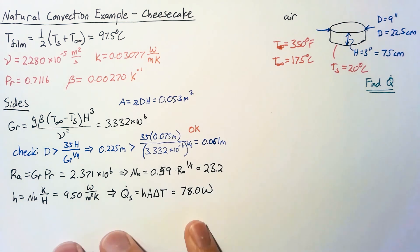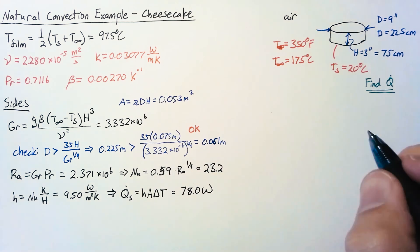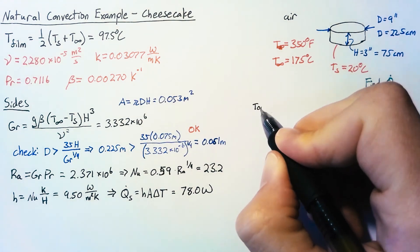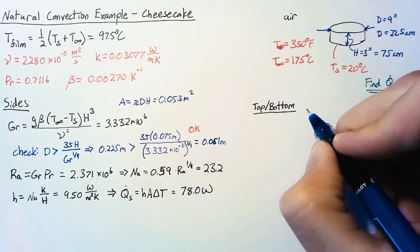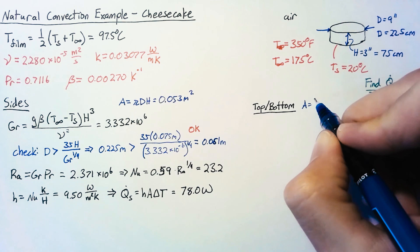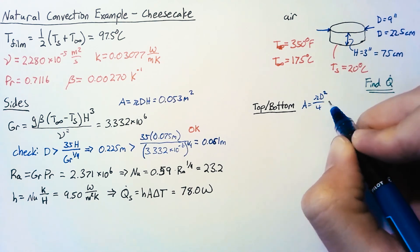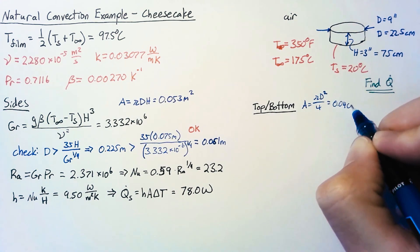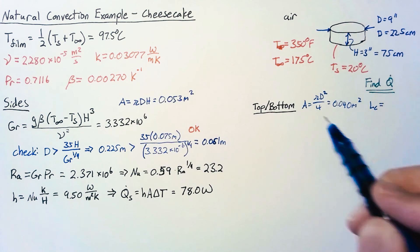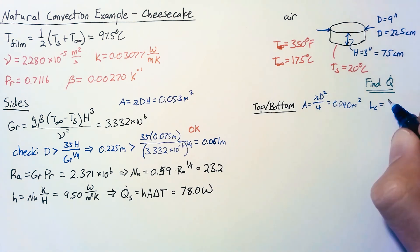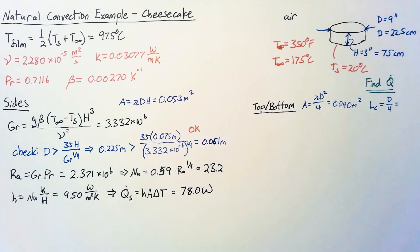So now that we have the sides let's look at the top and the bottom. Now for the top and the bottom almost everything is going to be identical between the two. For both the area is going to be pi D squared over 4 which ends up being 0.040 meters squared and the characteristic length for a circle is the area divided by the perimeter which ends up being D over 4 which is 0.056 meters.